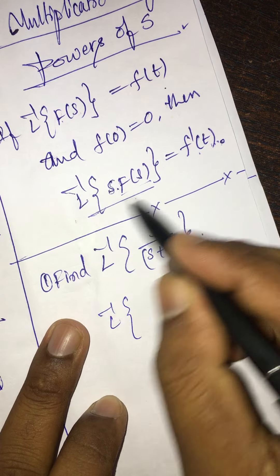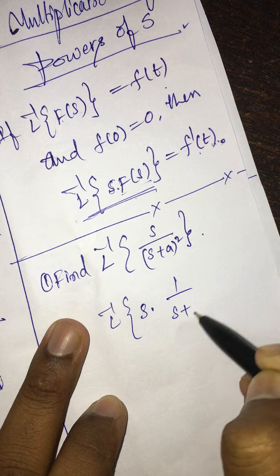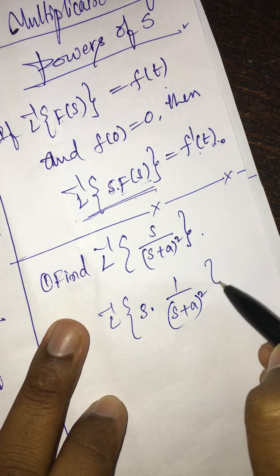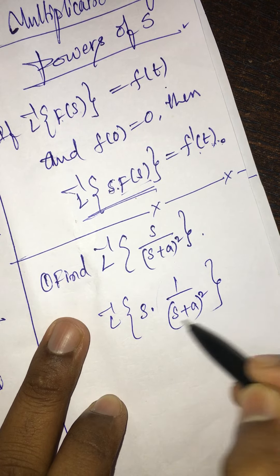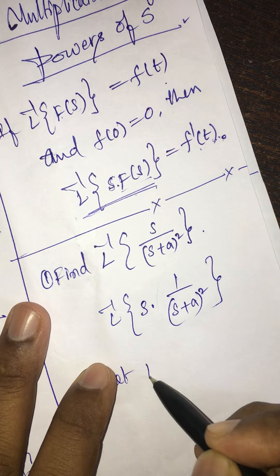How to find f(s) in this L inverse? We have S times 1/(s+a) whole square. Now this is f(s).